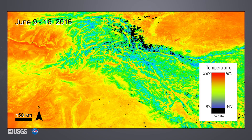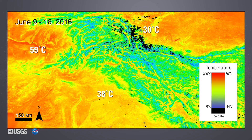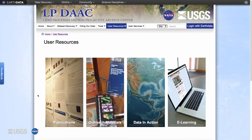A color map is an RGB assignment of colors to certain values. A color map can be added using most geographic information system, or GIS, software to better visualize the variations in temperature. Here's the same eight-day daytime LST image shown using a color map. The LST of the area ranges from hotter, shown in shades of red and orange, to cooler, shown in shades of greens and blues. The color black is used for fill values and data with no values.